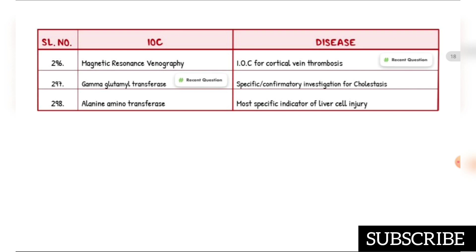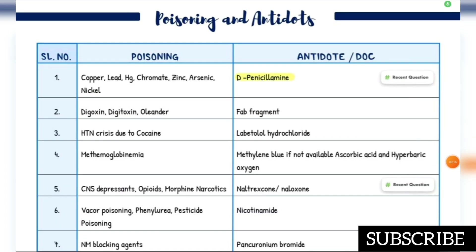Most specific indicator of liver cell injury is alanine aminotransferase. Poisoning and antidotes section: copper, lead, mercury, chromate, zinc, arsenic, and nickel poisoning — antidote is D-penicillamine.